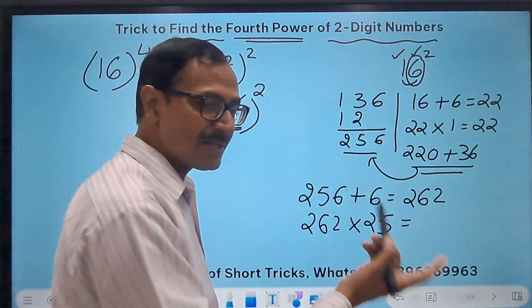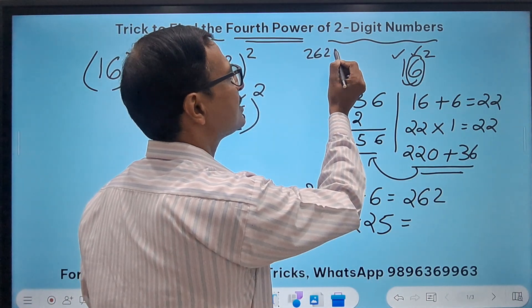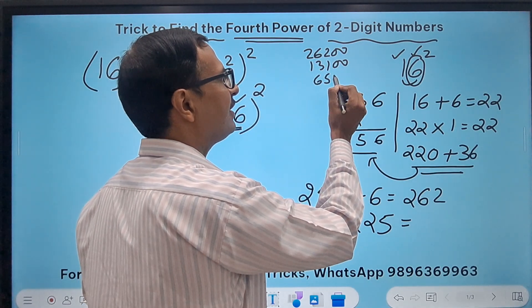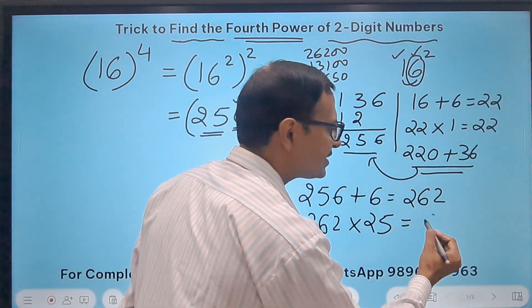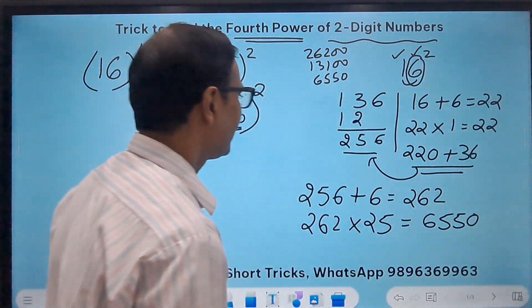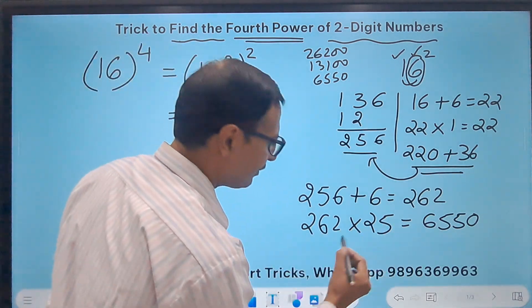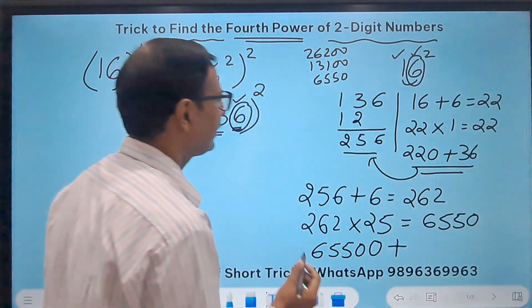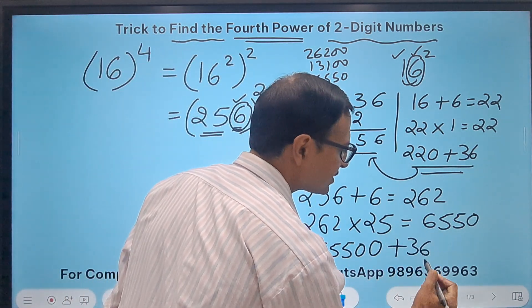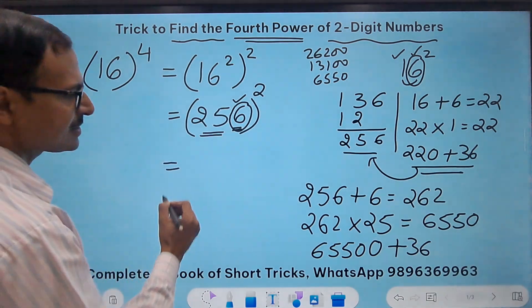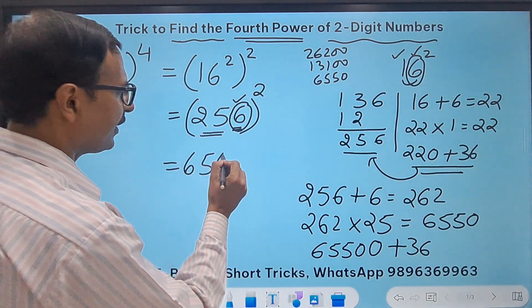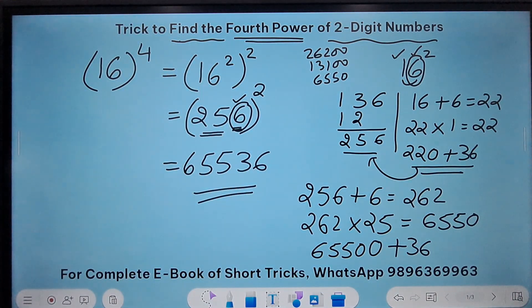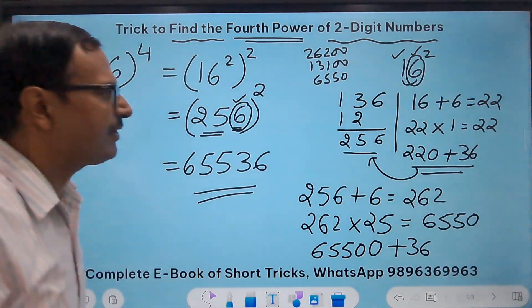Now since I took one digit here, I will put 10 with this number and add 6 square, that means 36, to the result. So I get 6,550 plus 36 is 36, and now pick up the calculator and check. 16 raised to power 4 is 65,536.